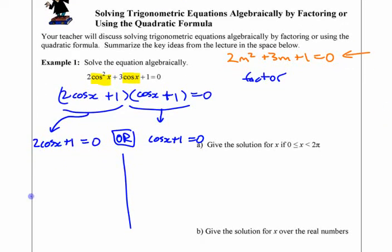If this first one is 0, 2 cos x plus 1 equals 0, or cos x plus 1 equals 0. And you find answers for each of those separately. 2 cos x plus 1 equals 0. So if you work your way down here, you get cos x equals negative 1 half. And on this side, if you isolate, you get cos x equals negative 1.